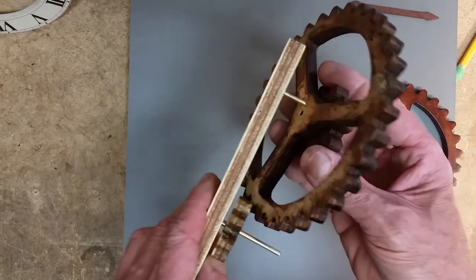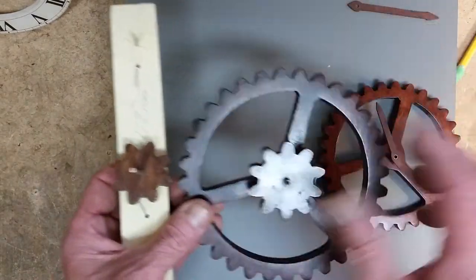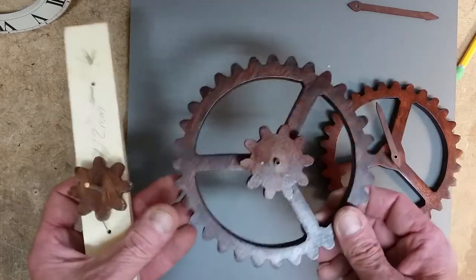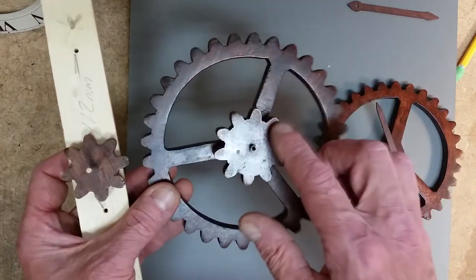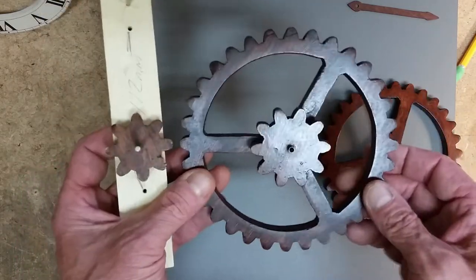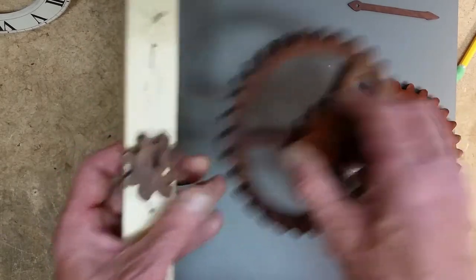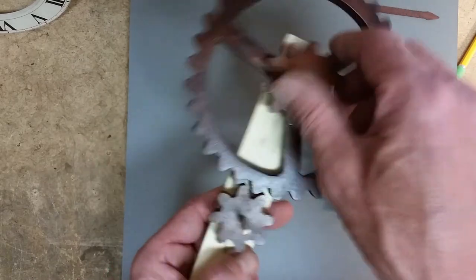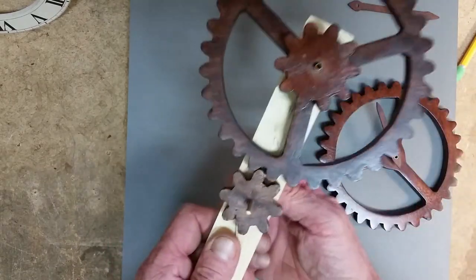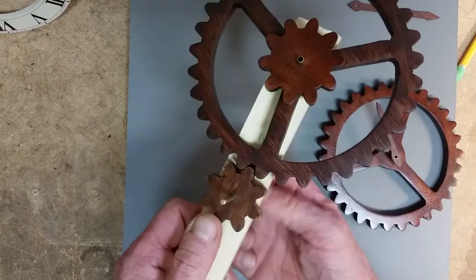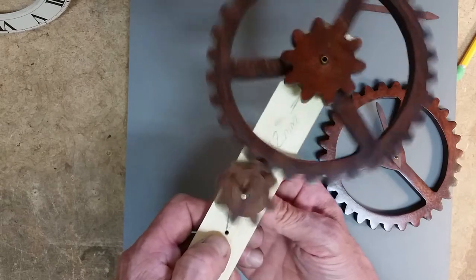This gear here is called the minute wheel and there's a minute pinion on there. In clock making, the large gears are wheels and the small gears are pinions. Now this gear here is simply being driven by this cannon pinion here.